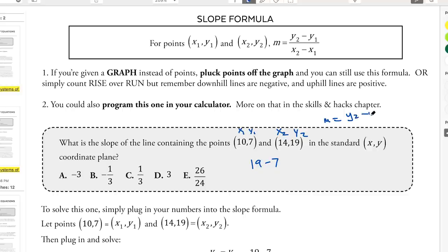So even though this seems like an easy problem, this is just a strategy to avoid careless errors. I do 19 minus 7 over 14 minus 10. And then I get 12 over 4, and that simplifies to 3.